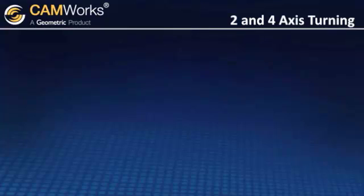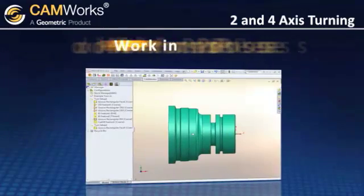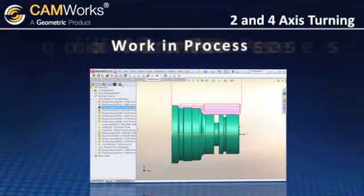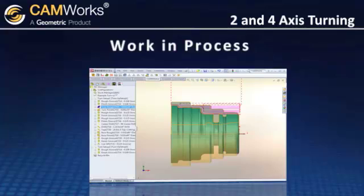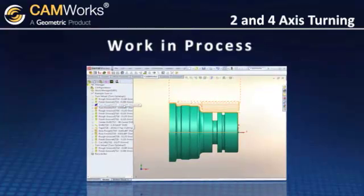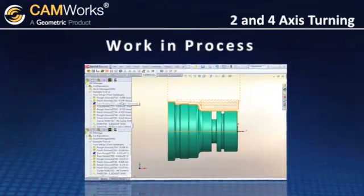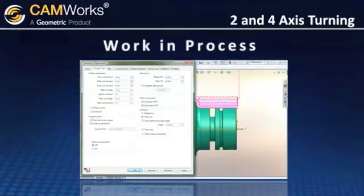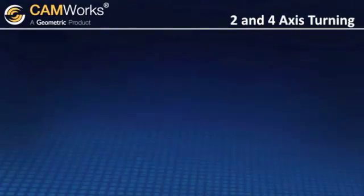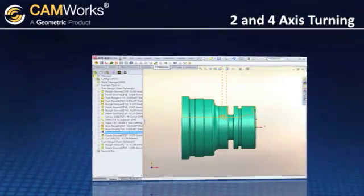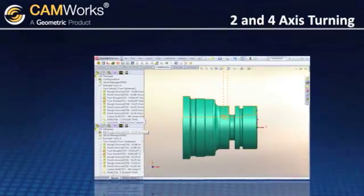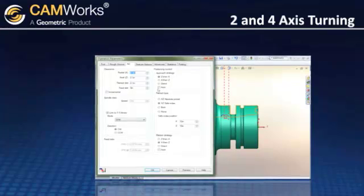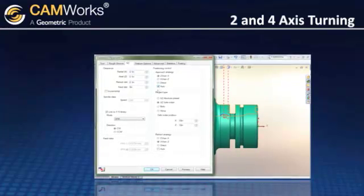For generating efficient toolpaths, the work-in-process function monitors the stock to generate toolpaths only where required, to reduce or eliminate time wasted air cutting. CamWorks automatically defines the tool approach and retract to avoid collision with the work-in-process model.